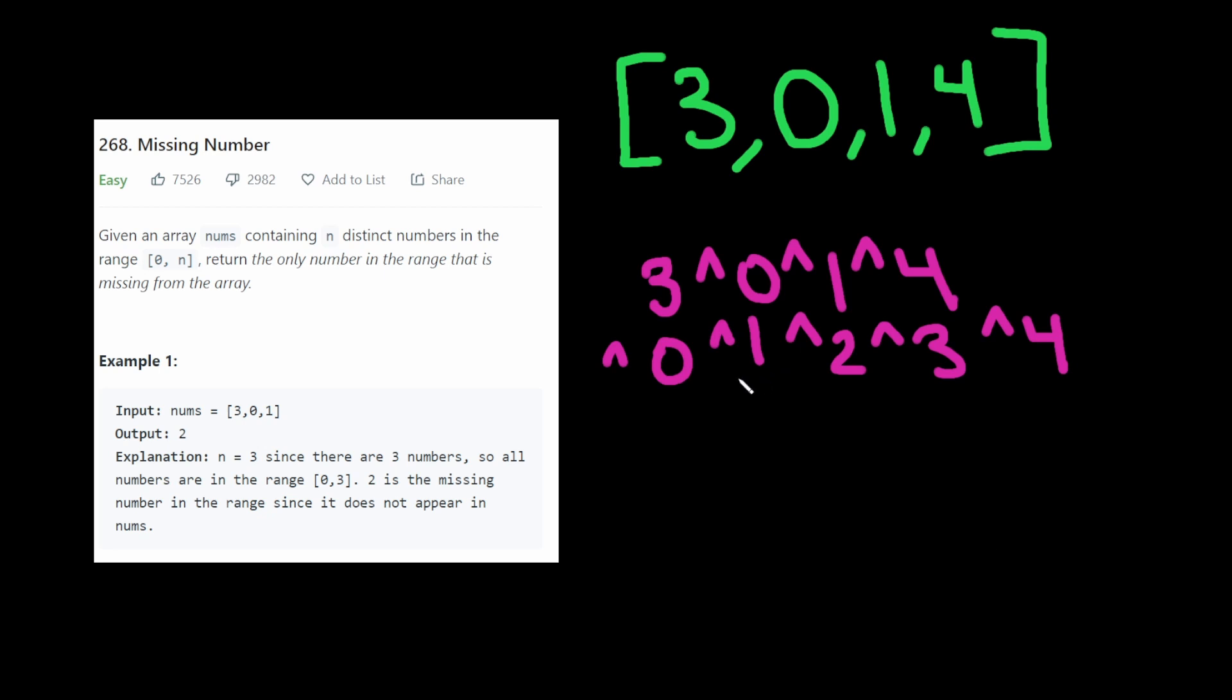So we discussed earlier that XORing a number by itself just gives 0. So what we can do is cancel out the numbers here that are repeating. So this 0, we can cancel that out. This 1, we can cancel that out.